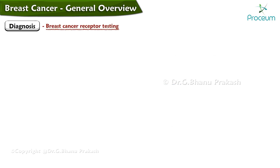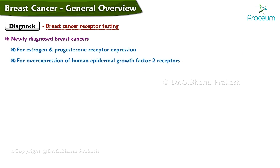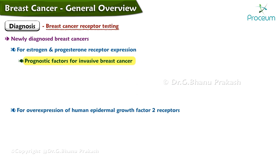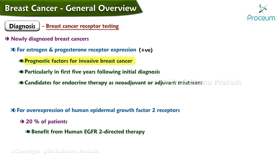Newly diagnosed breast cancer must be tested for estrogen and progesterone receptor expression and for overexpression of HER2 receptors. Estrogen receptor and progesterone receptor are prognostic factors for invasive breast cancer, particularly in the first five years following initial diagnosis. Patients who are ER and PR positive are candidates for endocrine therapy as neoadjuvant or adjuvant treatment. HER2 overexpression is present in 20 percent of patients and predicts those who will benefit from HER2-directed therapy.